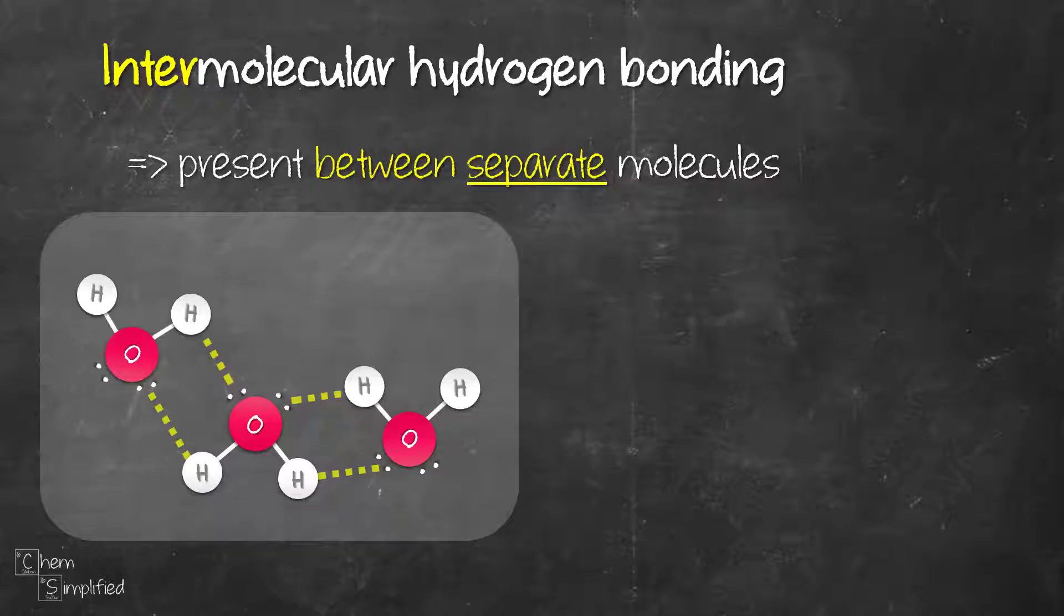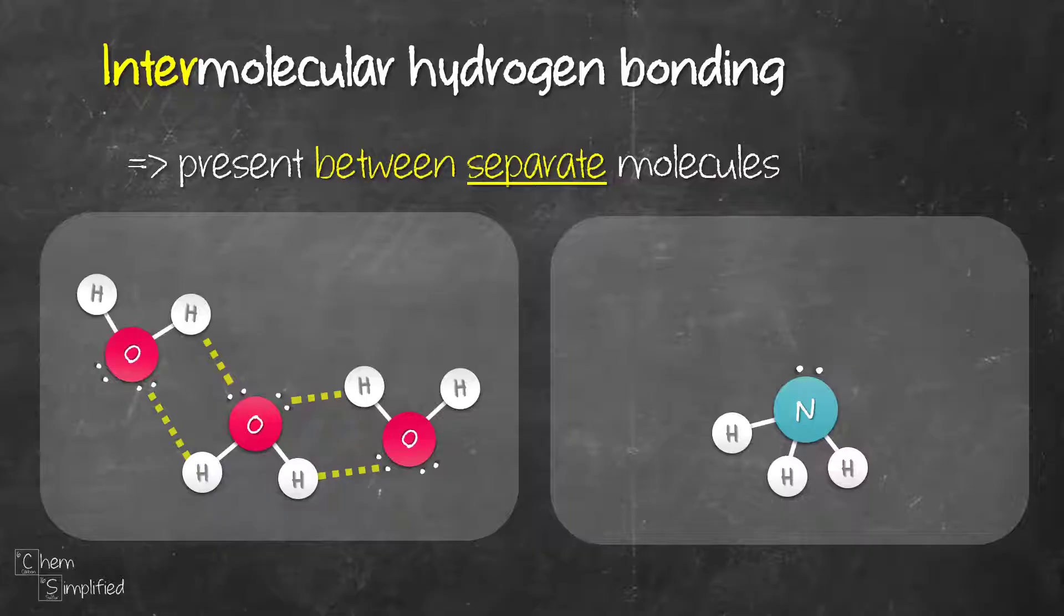Intermolecular hydrogen bonding is not limited to only the same type of molecule. It can also exist between different molecules. Let's take aqueous ammonia for example. We have ammonia NH3 in water. Ammonia has H covalently bonded to nitrogen, which is electronegative. Water has H covalently bonded to oxygen, which is also electronegative. Hydrogen bonding can happen between ammonia and water molecules like this. Oxygen of water molecule is attracted to hydrogen in ammonia molecules. This is basically what intermolecular hydrogen bonding is about.